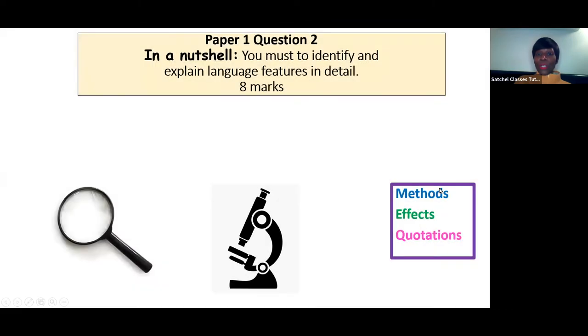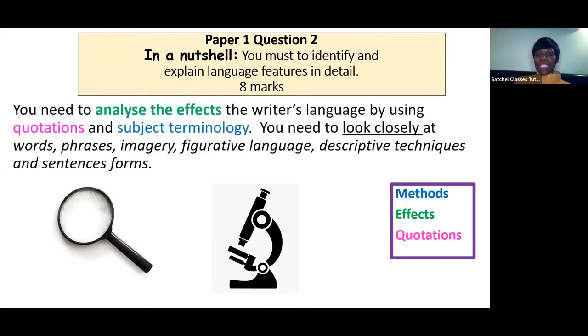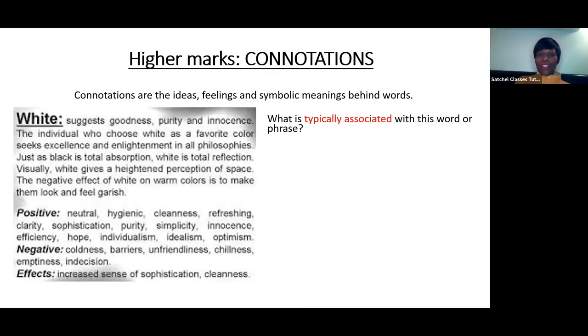Now let's look at your analysis question. You have to identify and explain language features in detail. In a nutshell, this means you need to analyze the effects of the writer's language by using quotations and subject terminology. You're looking closely at words, phrases, imagery, figurative language, descriptive techniques, and sentence forms. Three key features are: can you use methods, can you talk about effects, and can you choose appropriate quotations?